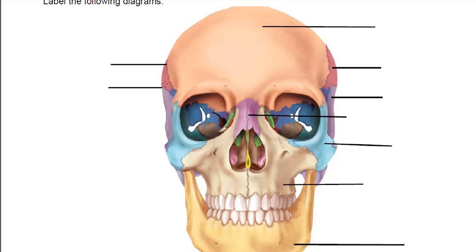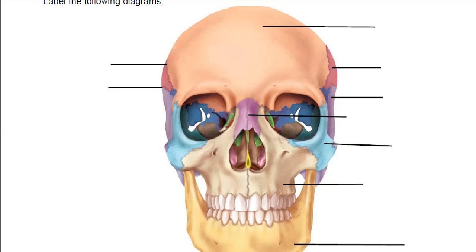The bridge of the nose — the bone part of your nose — is the nasal bone. The light blue here, which is the cheekbone, is the zygomatic bone. The jaw is made up of a top part and a bottom part. The top part is the maxillary bone, and the bottom part is the mandible — this is the moving part of your jaw.